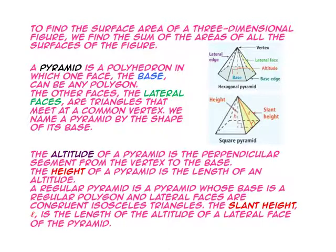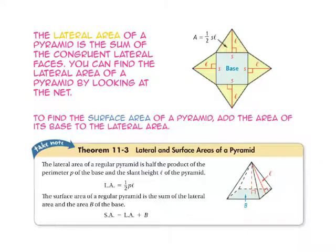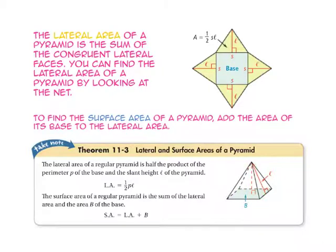The slant height, represented with a lowercase cursive L, is the length of the altitude of the lateral face. The lateral area of a pyramid is the sum of the congruent lateral faces. You can find the lateral area of a pyramid by looking at the net. To find the surface area of a pyramid, add the area of the base to the lateral area. The formula for the lateral area of a pyramid is one-half the perimeter of the base times the slant height. To find the surface area, the formula is the lateral area plus the area of the base.